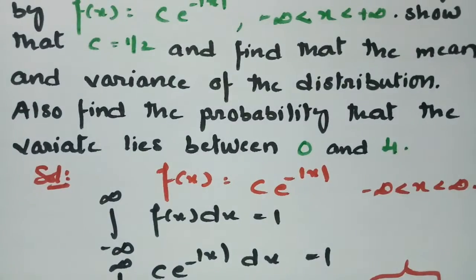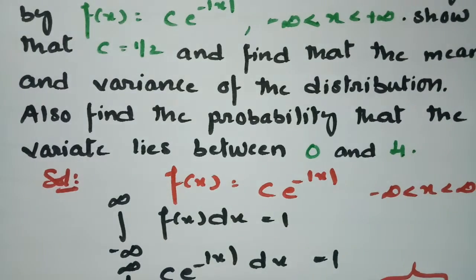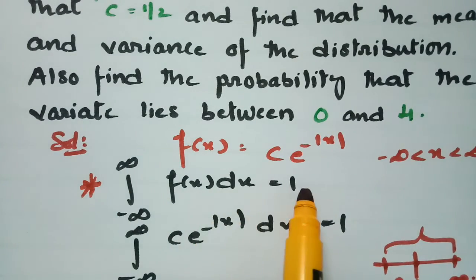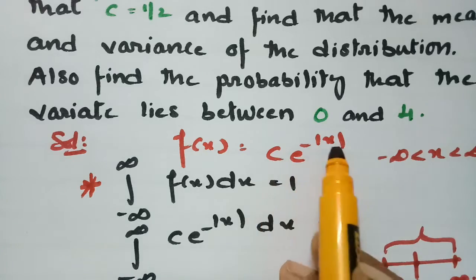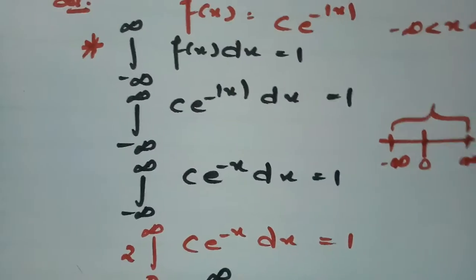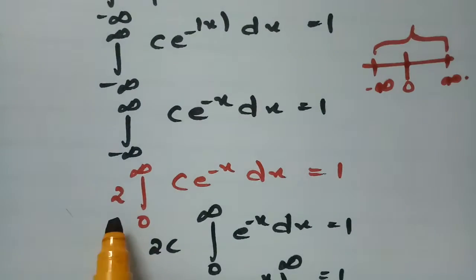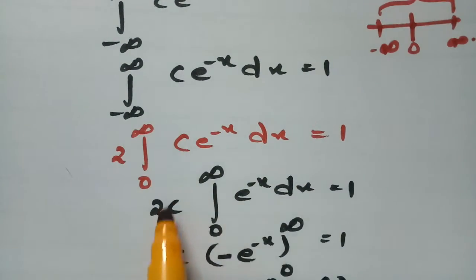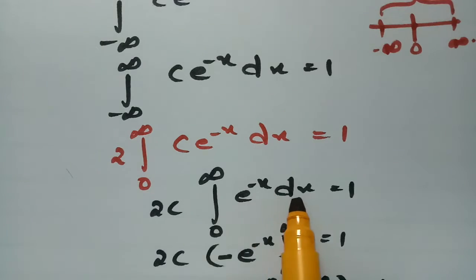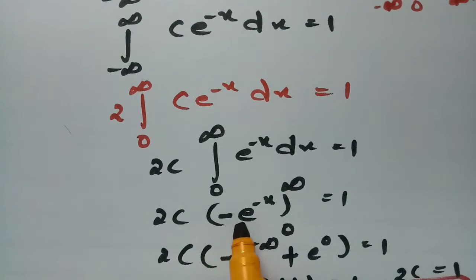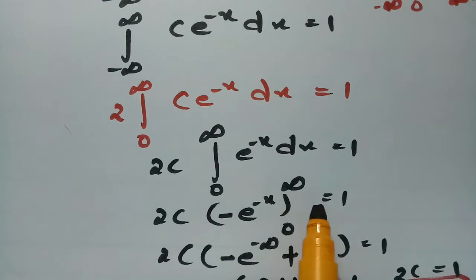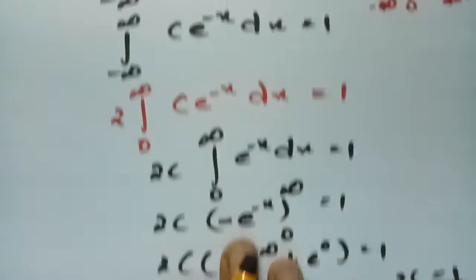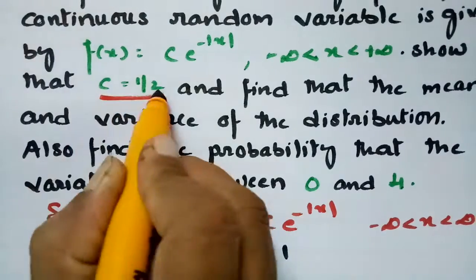To recap: the key formula is that the total probability equals unity, so the integral from minus infinity to plus infinity of f(x) dx equals 1. The function is c·e^(-|x|). Using the even function symmetry, we calculate twice the integral from 0 to infinity of c·e^(-x) dx. Bringing c outside and integrating, we get 2c = 1, giving c = 1/2.